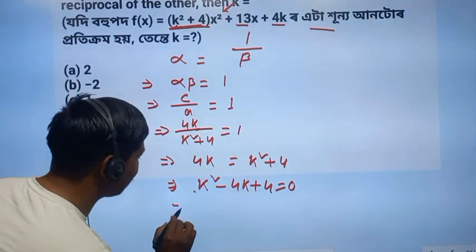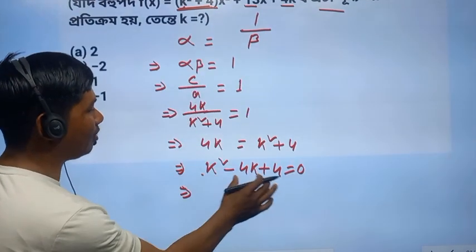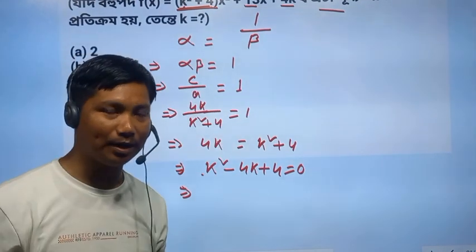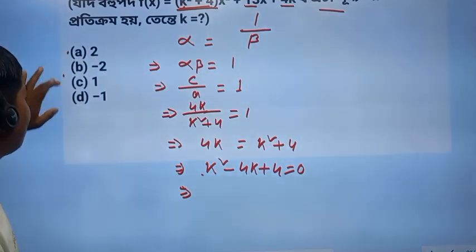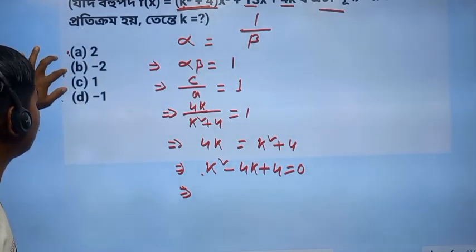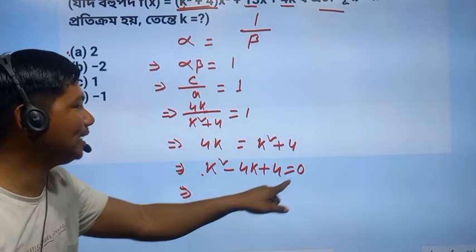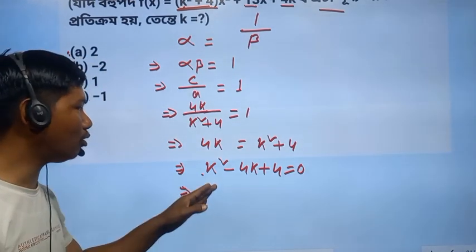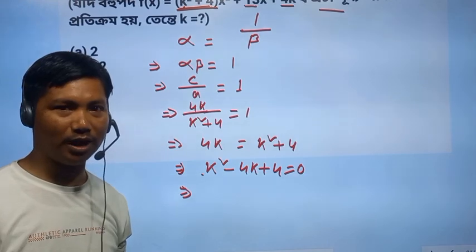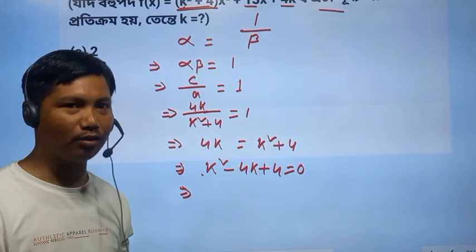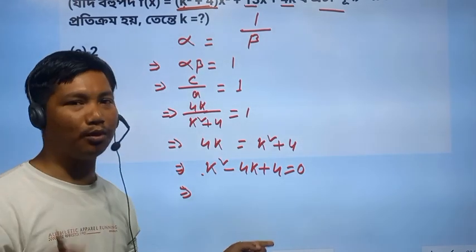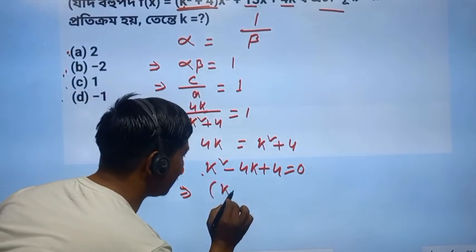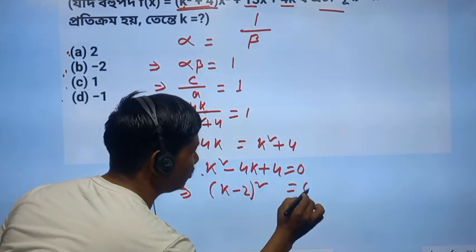So this is the factorization. If you don't have the factors, then you should not make options. But if you need a factor, you need an option to use 0 to do this. The formula that you have to use: (k minus 2) squared is equal to 0.